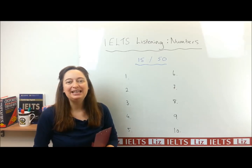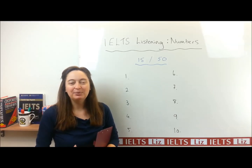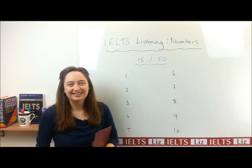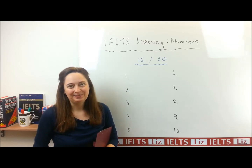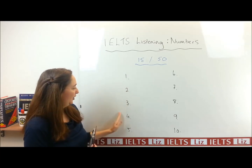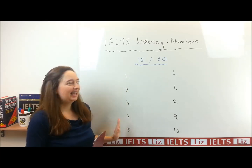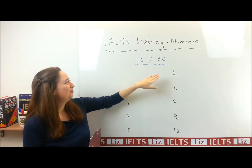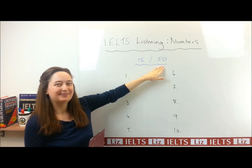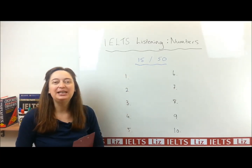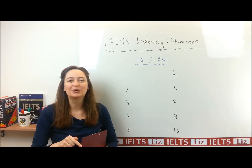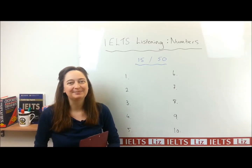So let me give you a little test. I'm going to give you some numbers and I would like you to listen and write them down, and after that I'll give you the answers. Now, I'm going to give you ten numbers and they will be either a teen — 15 — or a ty — 50. So are you ready? You need pen and paper. Have you got it? Press pause if you need to go and get it.